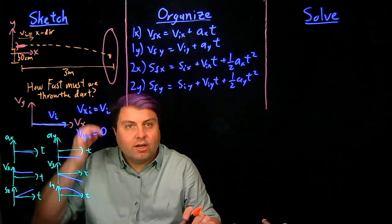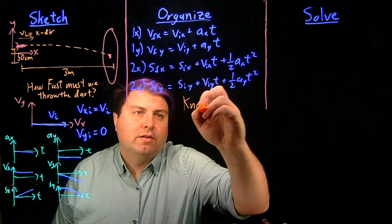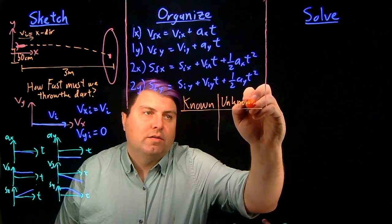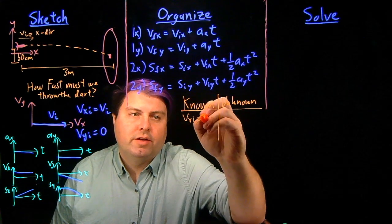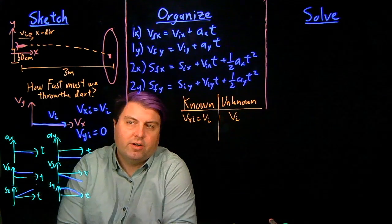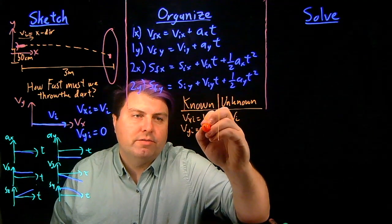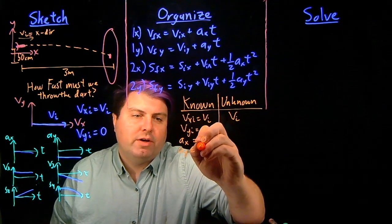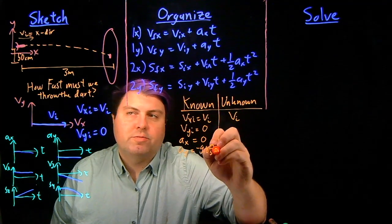So having all of this, we can start with our knowns and our unknowns. We know that vxi equals vi, but we're trying to solve for our unknown vi, so we want to have it over on here. We know that our vyi is equal to zero, we know our acceleration of the x is zero. We know our acceleration of the y is negative 9.8 meters per second squared.